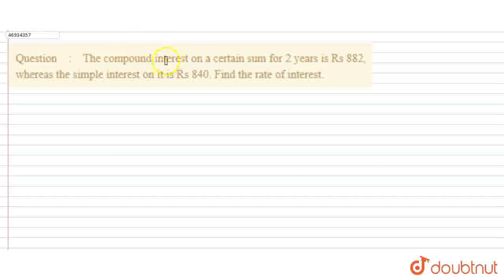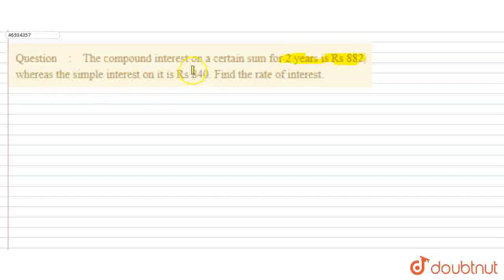Hello friends, the question we have here is that the compound interest on a certain sum for 2 years is given as Rs. 882, whereas the simple interest on the same sum is Rs. 840. Find the rate of interest.